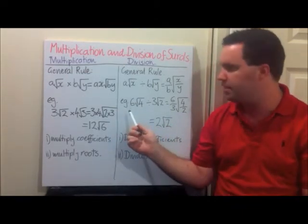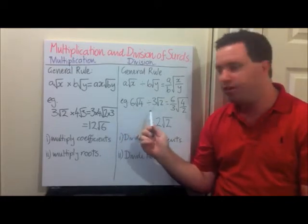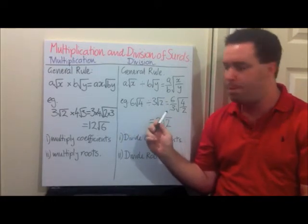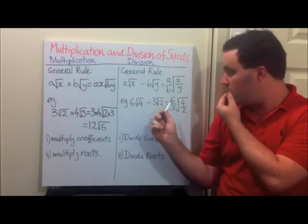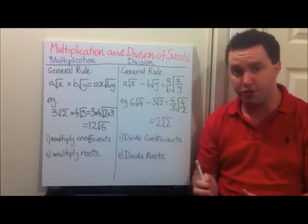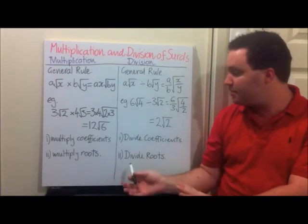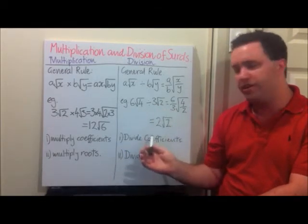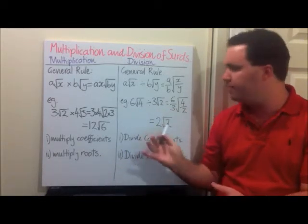With numbers: 6√4 divided by 3√2 is equal to (6/3) times the square root of (4/2). We're seeing similar rules here again. 6 over 3 is 2, 4 over 2 is 2, so we end up with 2√2.